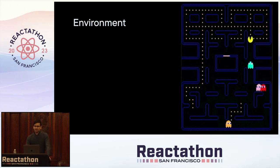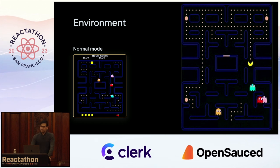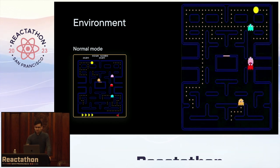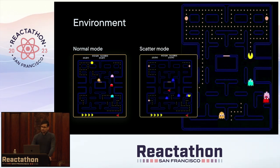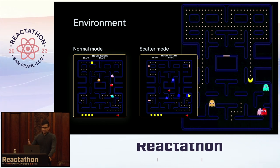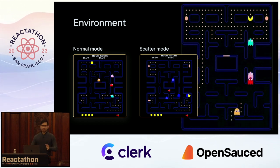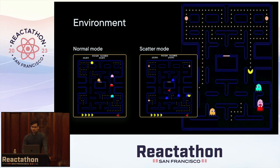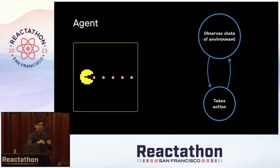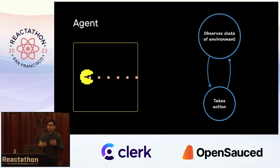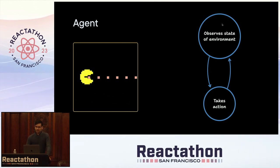One of my favorite examples of this is Pac-Man. Pac-Man can be considered the agent. The environment changes — you have normal mode where Pac-Man is just eating pellets and ghosts are chasing him, and there's also scatter mode where, when Pac-Man eats the special pellet, the ghosts become edible and Pac-Man can chase them. The behavior of the environment actually changes, and Pac-Man can do something different. At every time step, Pac-Man observes the state of the environment: is a ghost about to chase me, or am I just in front of pellets I could eat? Then, based on the state of the environment, the agent takes an action: move up, move down, move left, move right. In other video games and in robotics, there are many other things it could do.